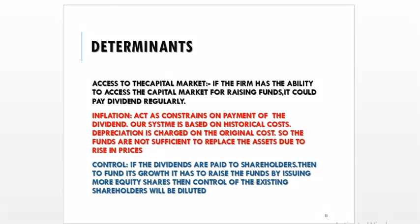The firm's dividend policy is also influenced by its ability to access the capital market. If the firm has the ability to access the capital market for raising funds, it could pay dividend regularly and easily. Inflation is also a constraint on the payment of dividend, because our system is based on historical cost — depreciation is charged on the original cost. The funds provided by depreciation are not sufficient to replace the asset in the future as prices rise, so it puts restriction on the payment of dividend.